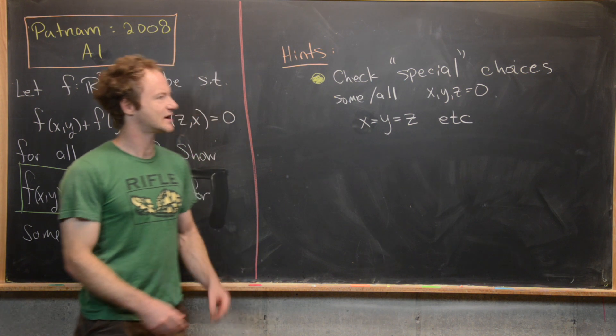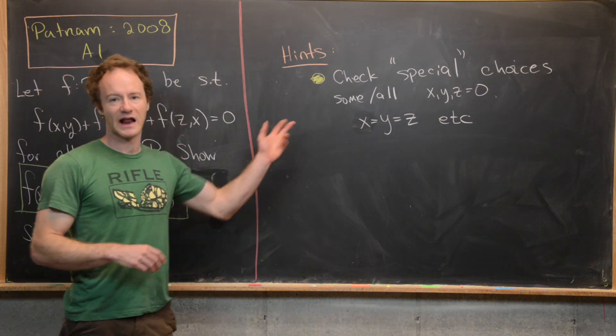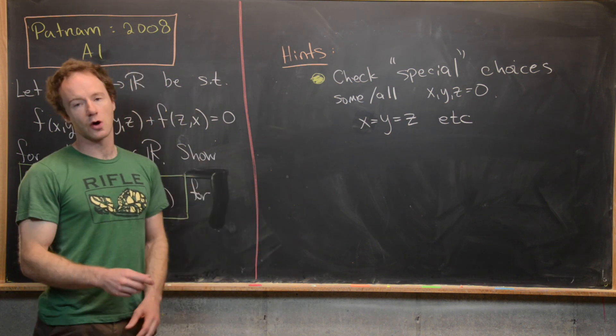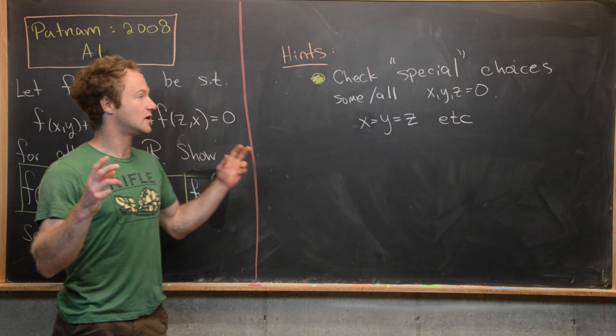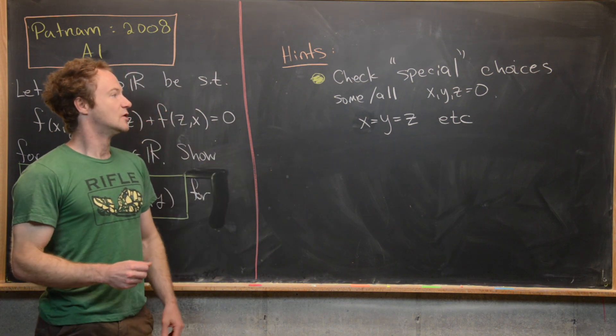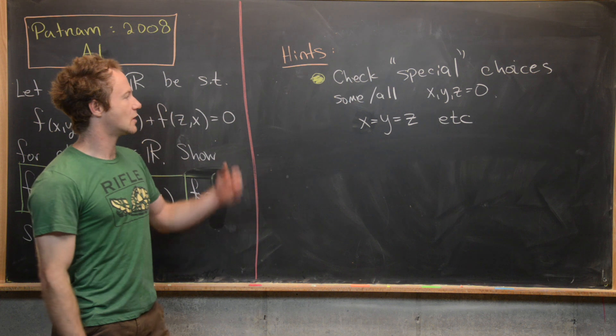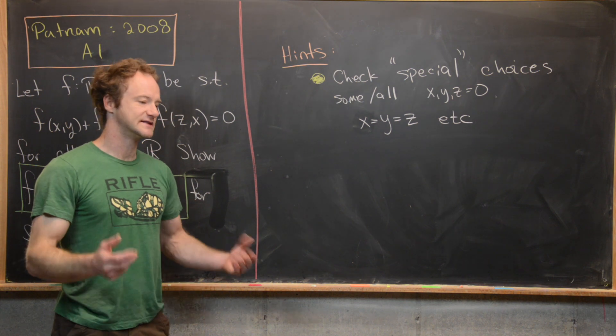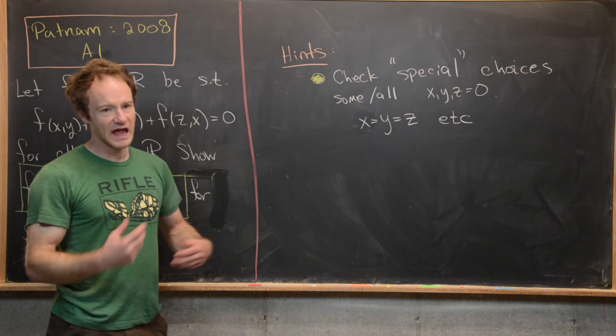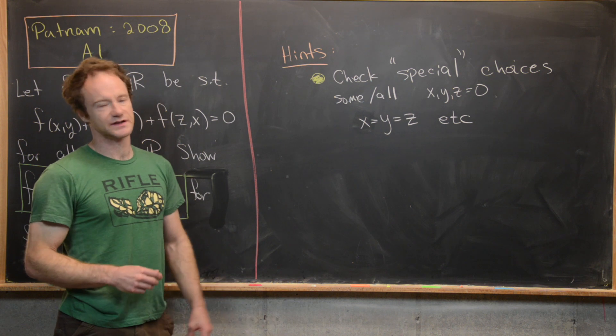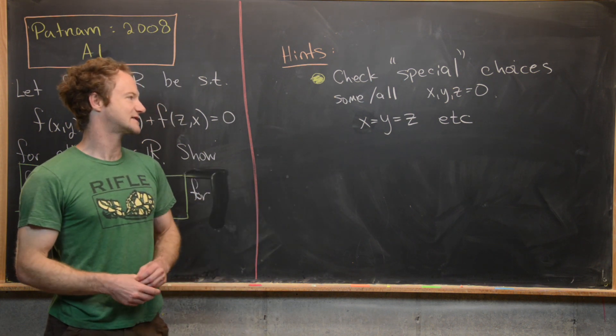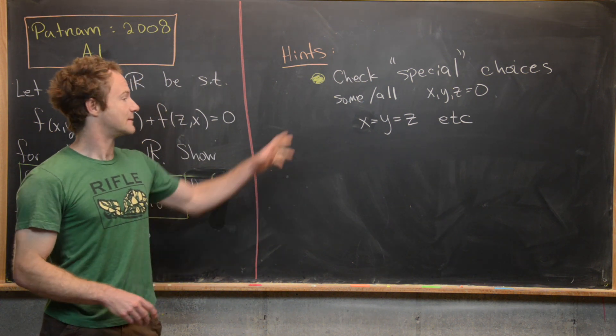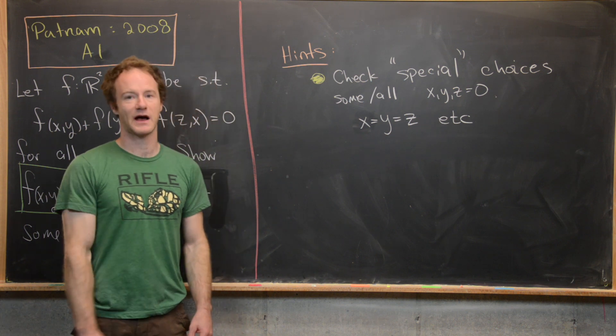All right, so there's really only one hint here. Well, it's actually kind of a multi-part hint, but I'll let you guys look at this hint for a little bit before we look at a solution. Our hint should be to check all special choices for x, y, and z. So maybe some or all of them are zero. So maybe like x equals zero, y and z are free, x and y is zero, z is free, so on and so forth. Or maybe you could look at the case when x, y, and z are all the same. Maybe that's also interesting. So maybe give this problem a go with this hint and then we'll come back with a solution.